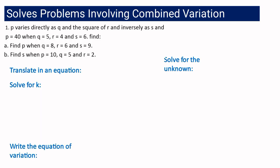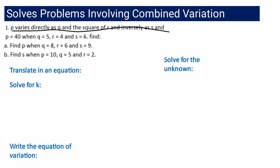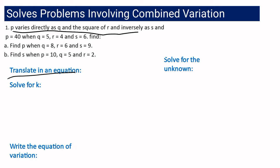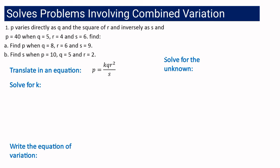To answer the problems, we will translate the statement into the equation, solve for the constant of variation, write the equation of variation, and use it to find the unknown. For problem 1, p varies directly as q and the square of r and inversely as s, so the equation is p equals kqr squared over s.